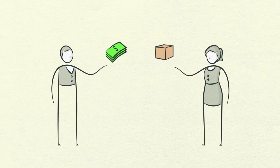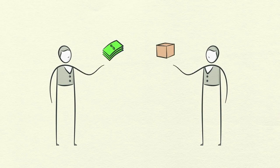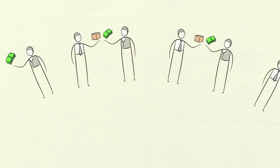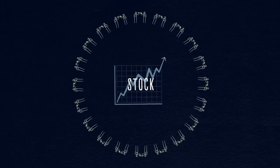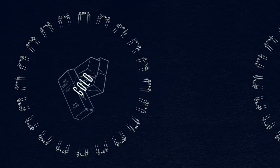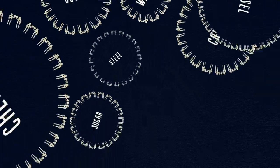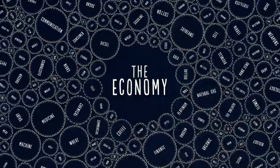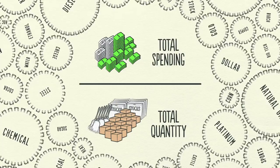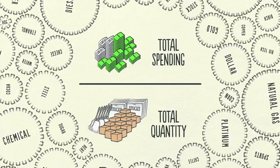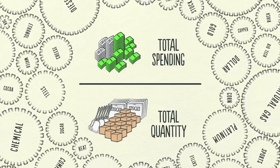All cycles and all forces in an economy are driven by transactions. So if we can understand transactions, we can understand the whole economy. A market consists of all the buyers and all the sellers making transactions for the same thing. For example, there is a wheat market, a car market, a stock market, and markets for millions of things. An economy consists of all of the transactions in all of its markets. If you add up the total spending and the total quantity sold in all of the markets, you have everything you need to know to understand the economy.